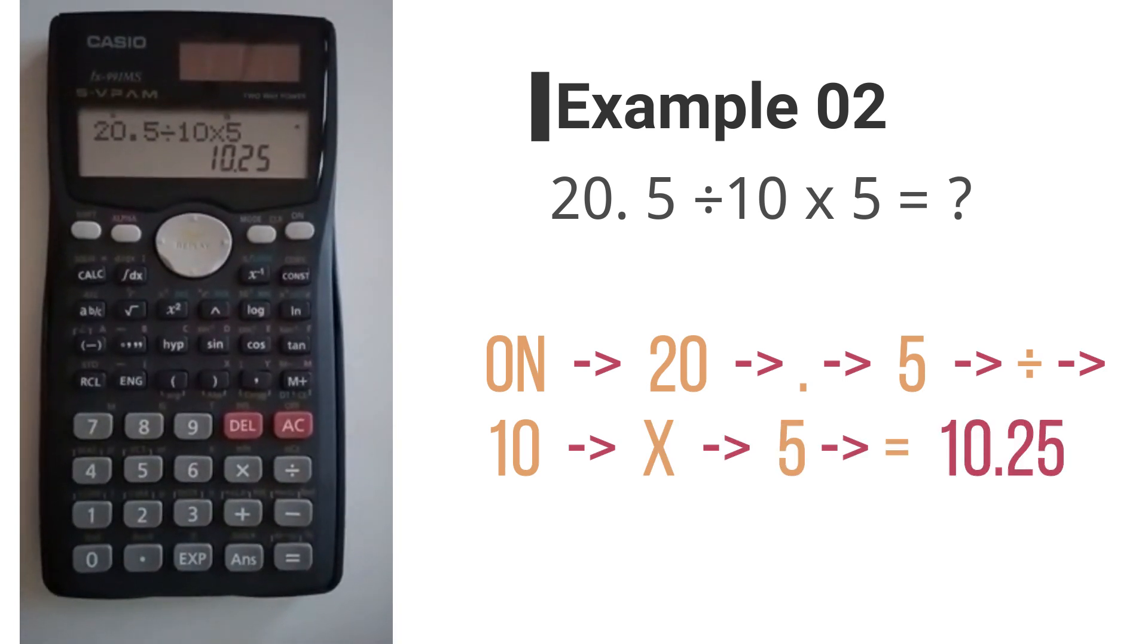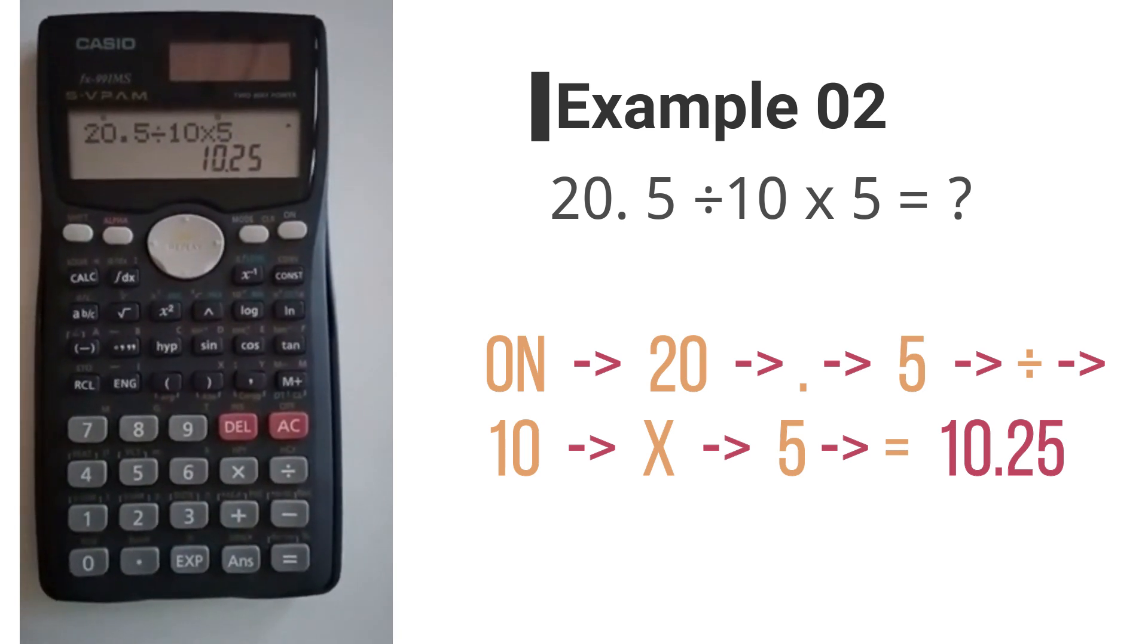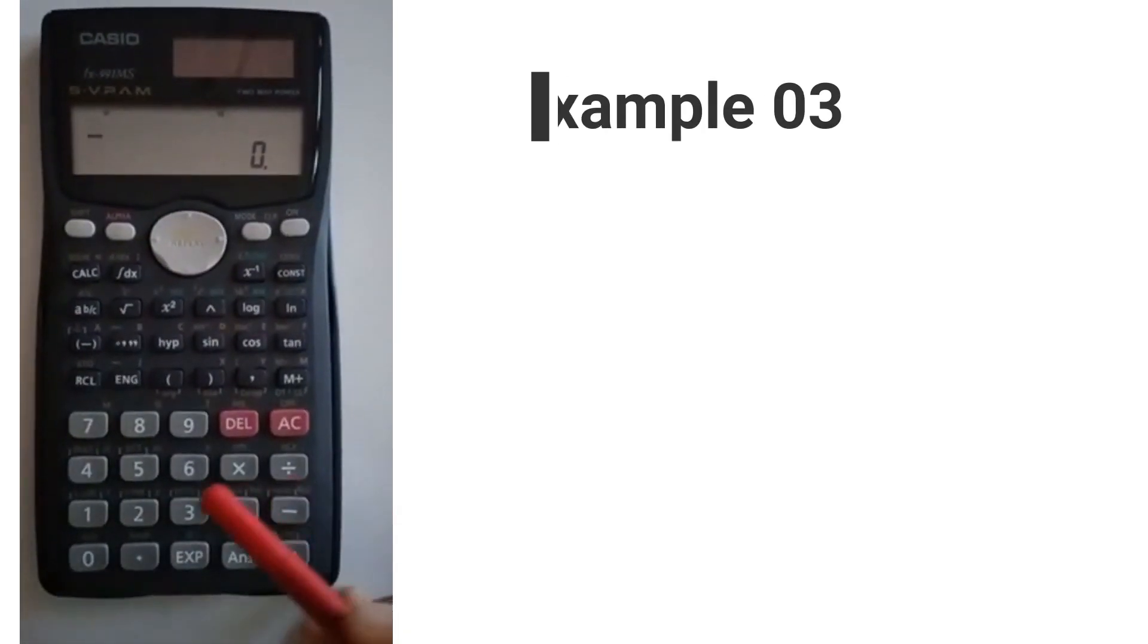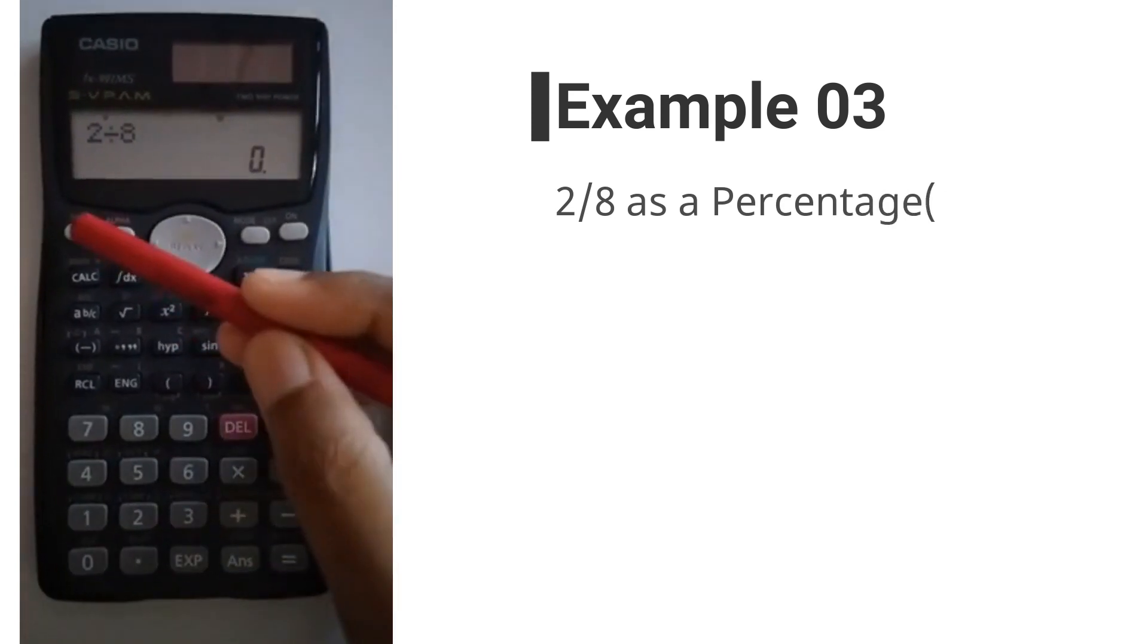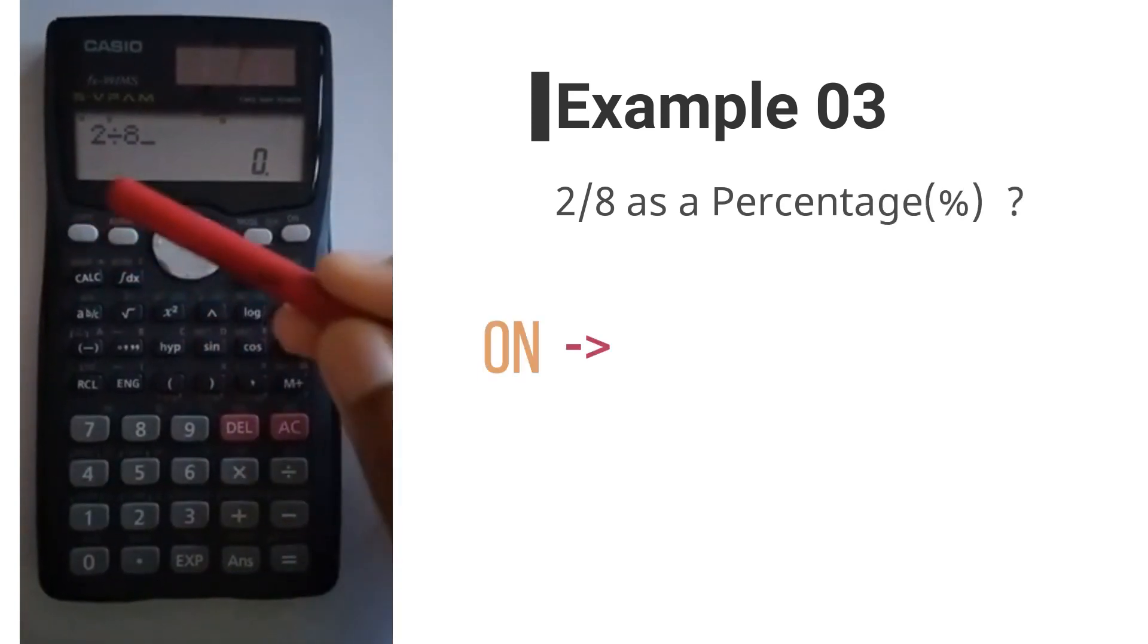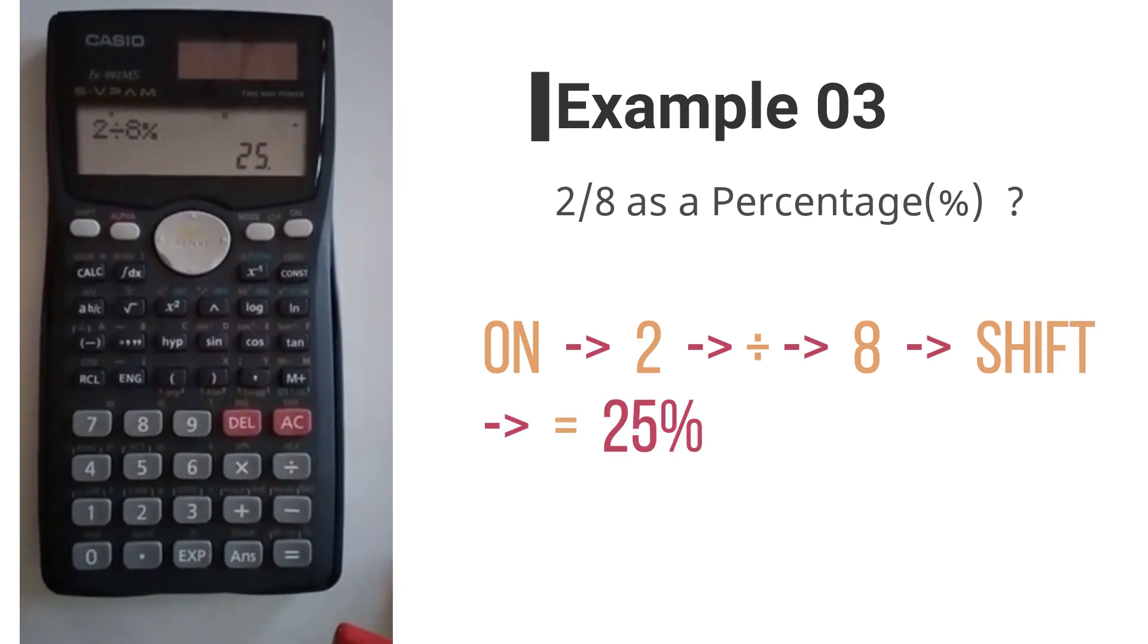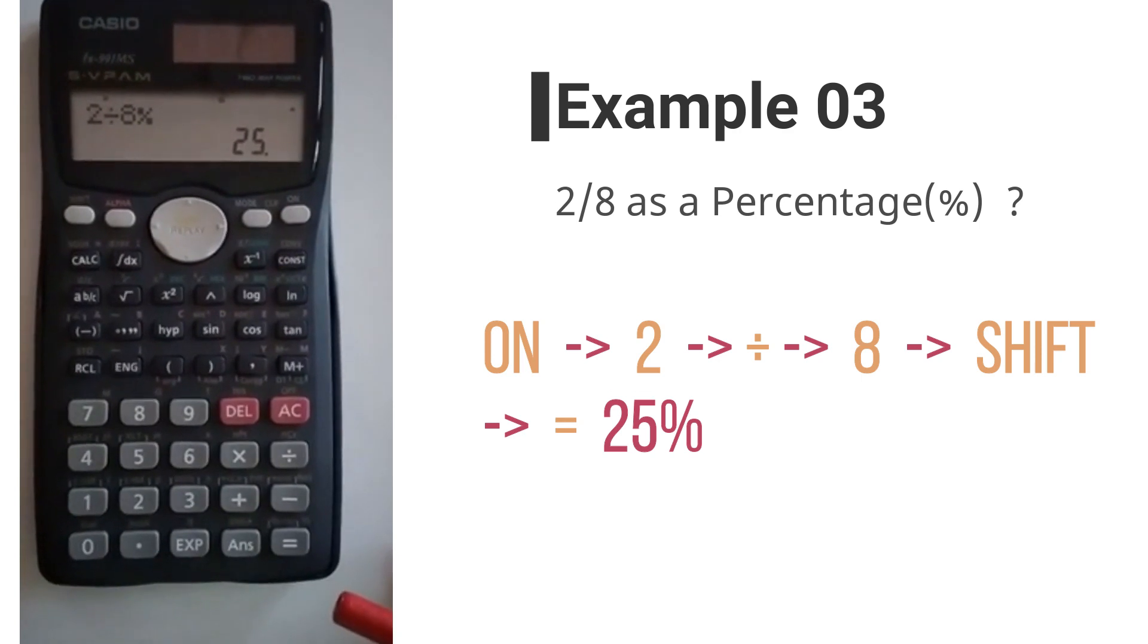Equals 10.25. Now let's move on to a different example, that is to find the percentage. 2 divided by 8, shift equal, gives you the percentage as 25%. So you have to remember, always when you are finding